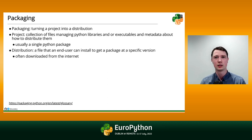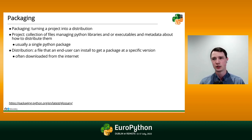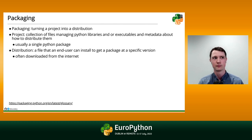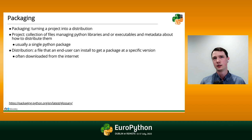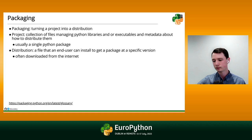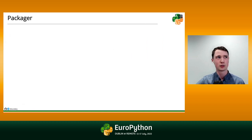So what is a distribution? A distribution is a single file that by itself represents an entire project — so the Python package and at least some of the metadata that was originally in the project. It's a single thing that you can upload, you can download, and it can be installed. Once it's installed, the Python package is available for you to use in your Python code. So that's packaging — that's what we're going to talk about.